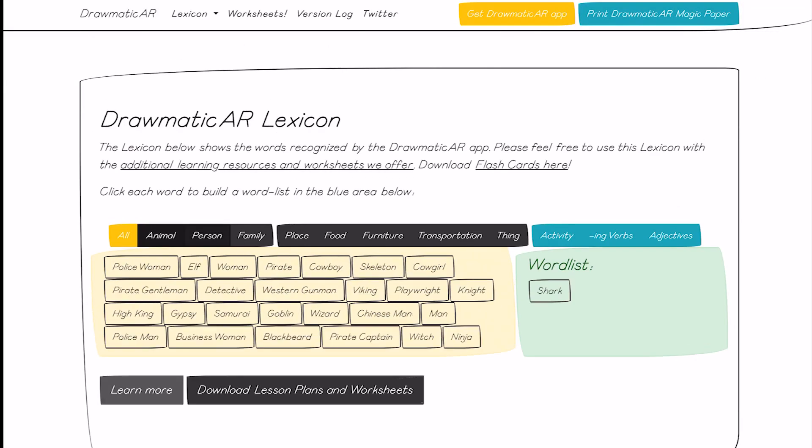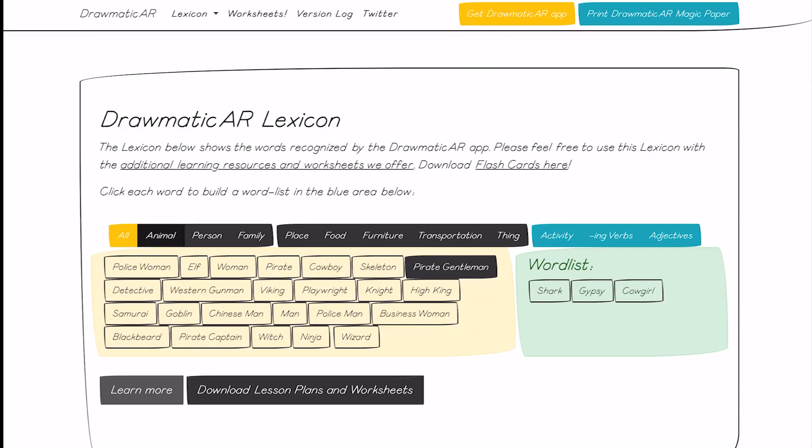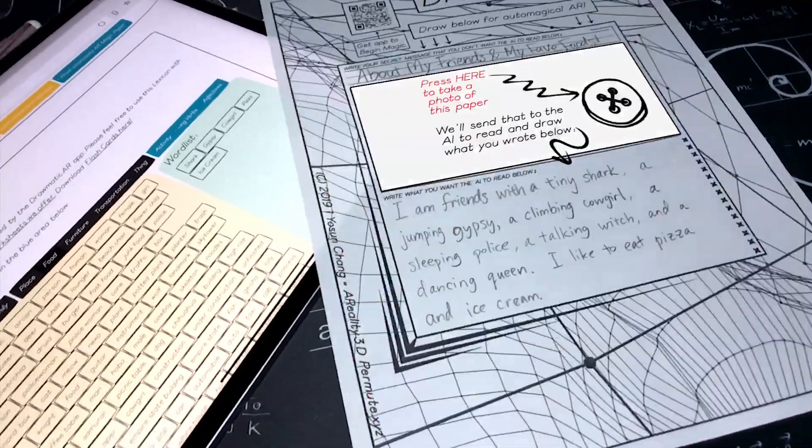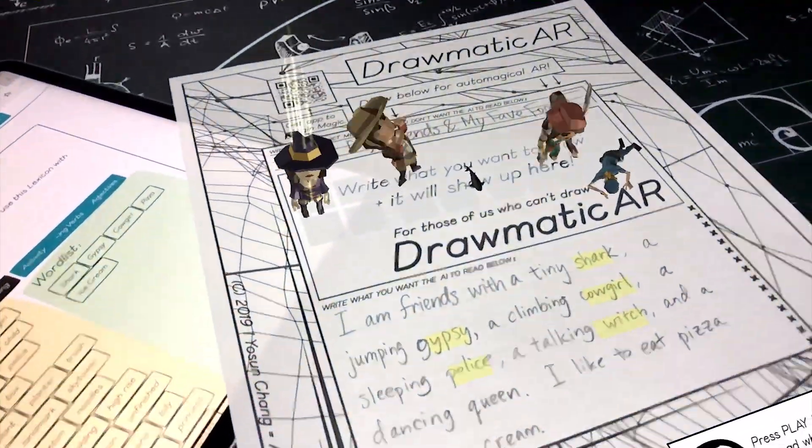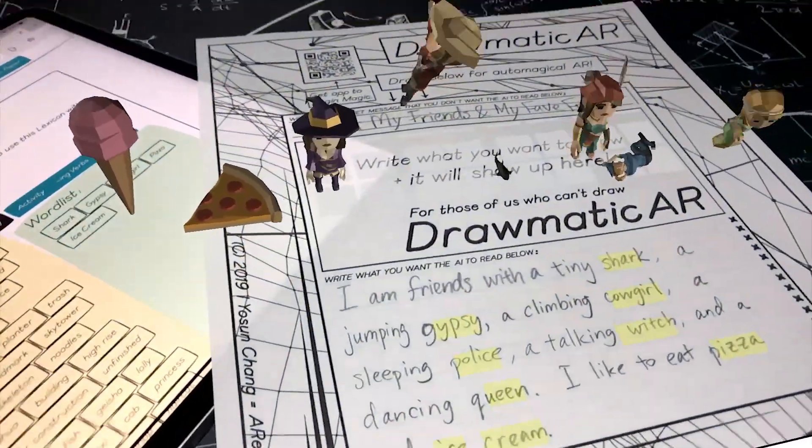The AI powering Dramatic AR recognizes over 200 common kid-friendly nouns and also simple verbs and adjectives to let you instantly and easily animate your characters.